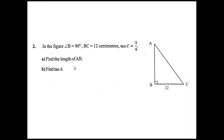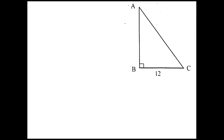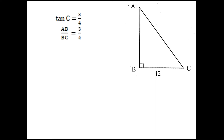The second question is: in the figure, angle B equals 90 degrees, BC equals 12 cm, tan C equals 3/4. Find the length of AB and find tan A. Let us look at the figure. Given that tan C equals 3/4. Tan is opposite side by adjacent side. Here, the opposite side of angle C is AB, and the adjacent side is BC. So we can write AB by BC equals 3 by 4. But it is given that BC equals 12 cm.